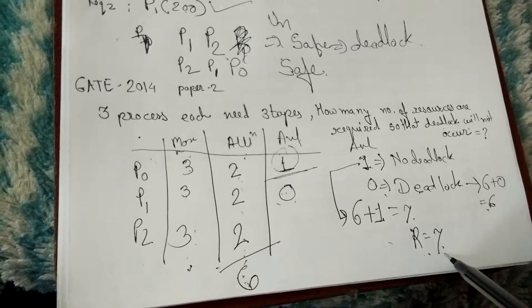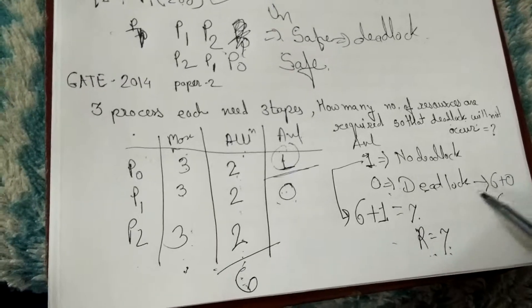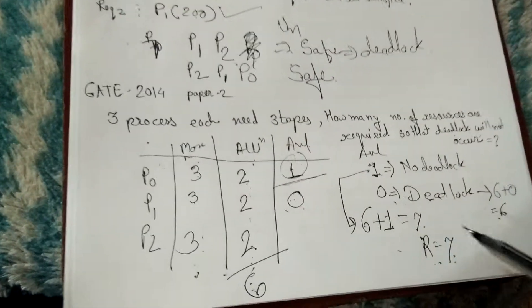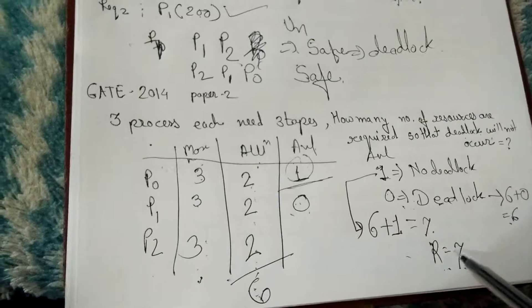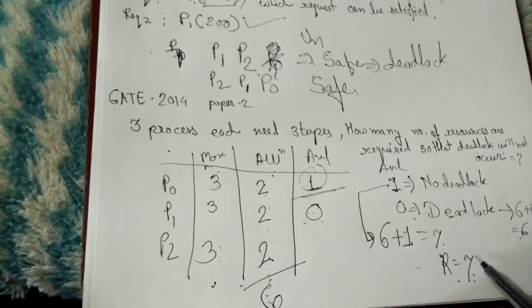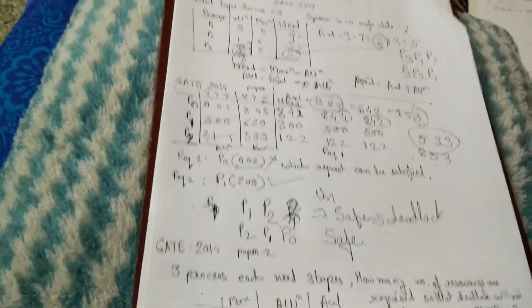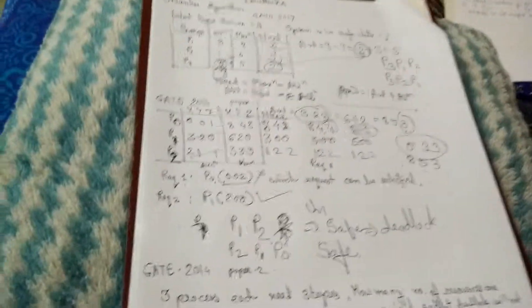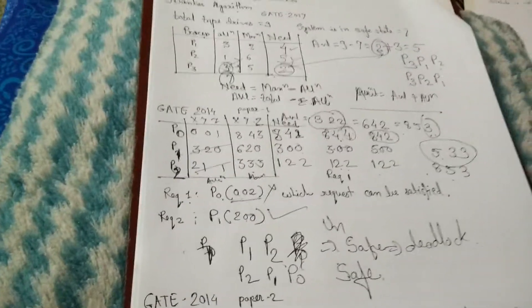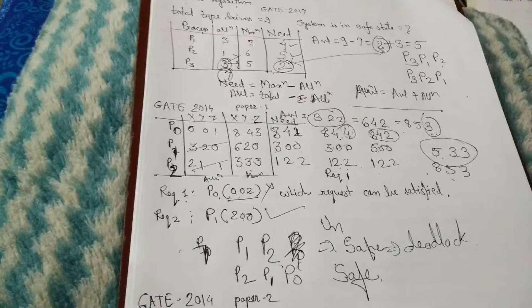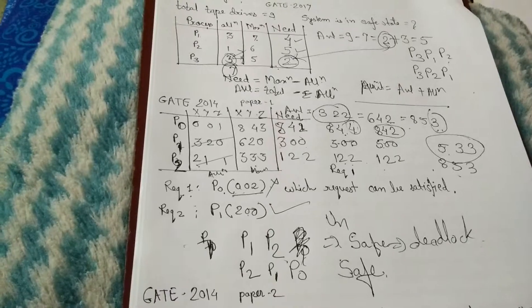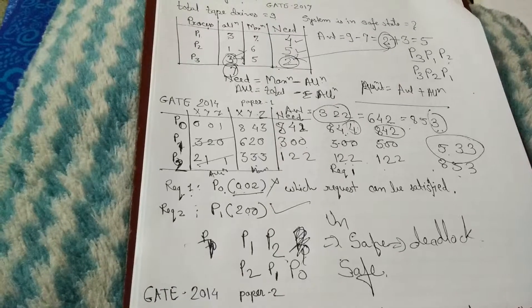Questions can be asked for how many resources are needed or how many processes can be served with a given number of resources. This covers the different types of numerical questions on deadlock that can be asked in GATE examinations.